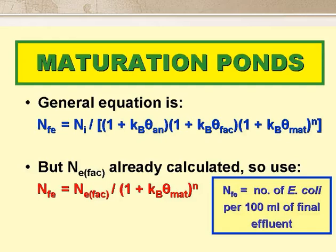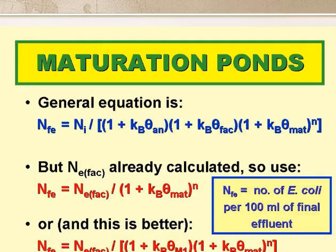Now maturation ponds. We've already worked out the number of E. coli in the facultative pond effluent, so we can use a simpler form of the general equation: NFE equals NE fac divided by 1 plus theta mat to the power N. Where NFE is the number of E. coli per 100 ml of the final effluent, NE fac their number per 100 ml of the facultative pond effluent, KB is the first order rate constant for E. coli removal in day to the minus 1, which is given by KB equals 2.6 times 1.19 to the power T minus 20, and theta mat is the retention time in each of the N maturation ponds. A better version of this equation is now shown at the bottom of the slide. It includes a term for the first maturation pond, and as we'll see in just a moment, this is very important.